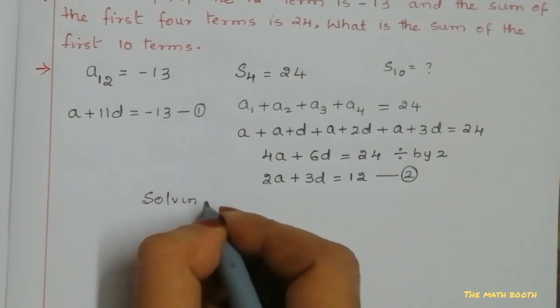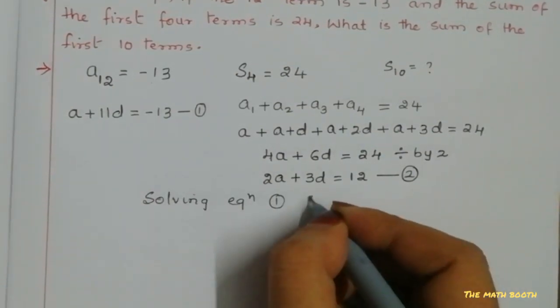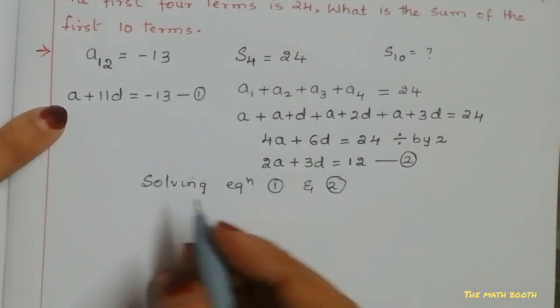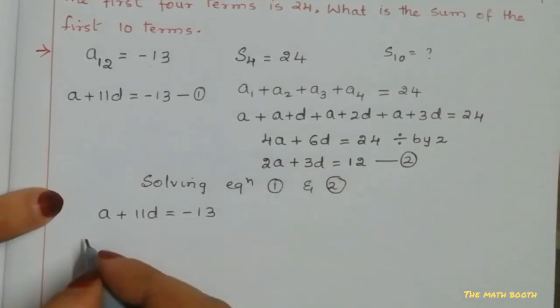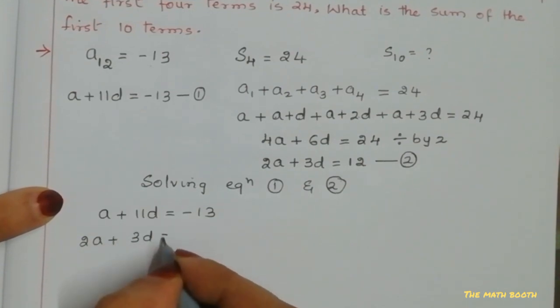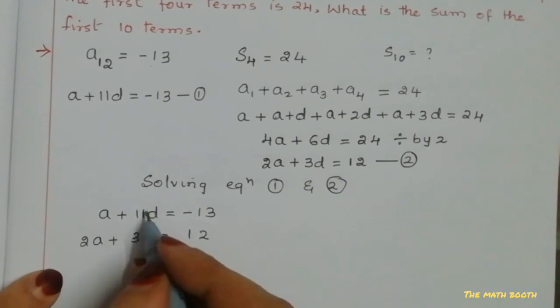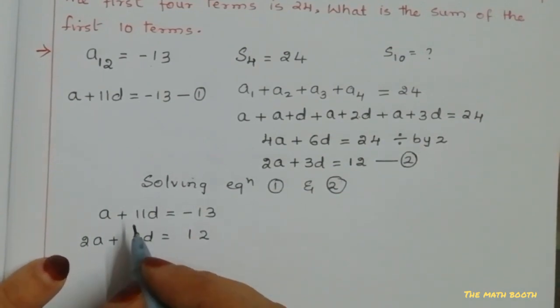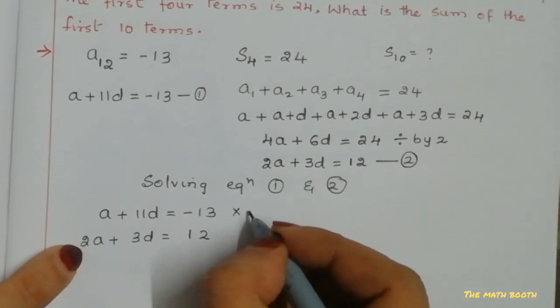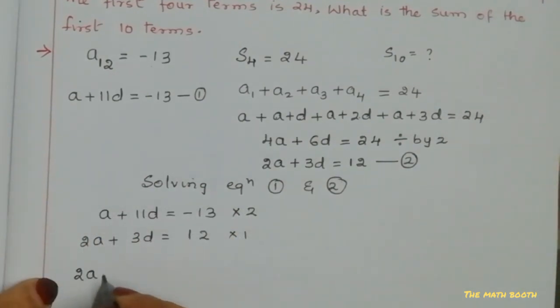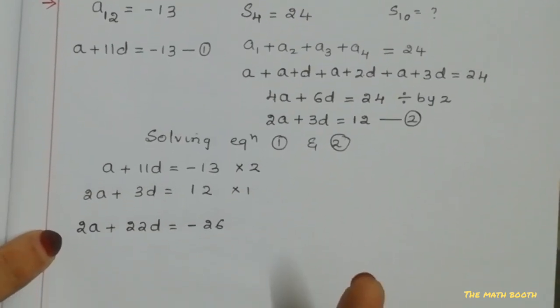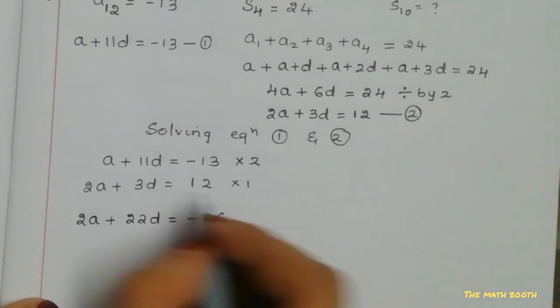Let us solve equations 1 and 2. Equation 1: a + 11d = -13. Equation 2: 2a + 3d = 12. But we cannot cancel here, nothing is same, so what we have to do? Coefficient of this we will multiply to this, and 1 we will multiply here. 2 into a is 2a, 2 into 11 is 22d, and 2 into 13 is 26, minus as it is.